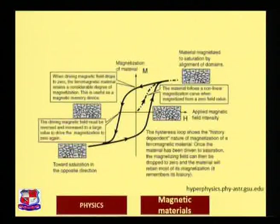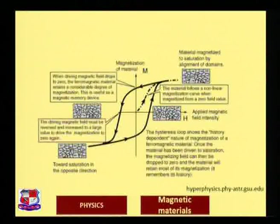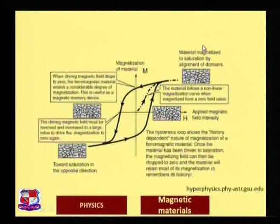Again moving the driving field in the reverse direction and increasing it, the material is magnetized again towards saturation with a non-linear nature. At saturation, all the magnetic moments in all the domains are reversed relative to the initial direction. Further increasing H gives a magnetization value in the reverse direction, and further still returns to the original magnetization direction.